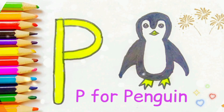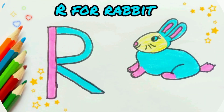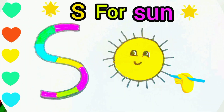P. P for penguin. Q. Q for queen. R. R for rabbit. S. S for sun.